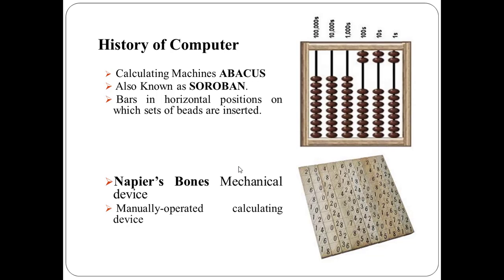The second one is Napier's Bones, which was a mechanical device — a manually operated calculating device for the purpose of multiplication, developed in 1617 by English mathematician John Napier.